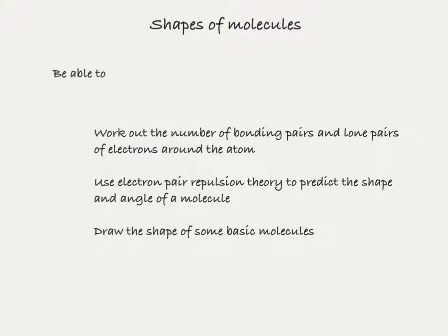By the end of this lesson, you should be able to work out the number of bonding pairs and lone pairs of electrons around an atom, and then use electron pair repulsion theory to predict the shape and angle of a molecule, and finally draw the shape of some basic molecules.